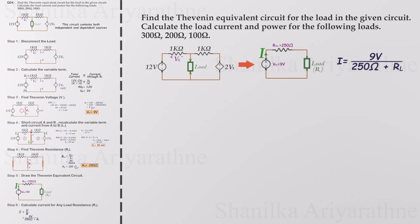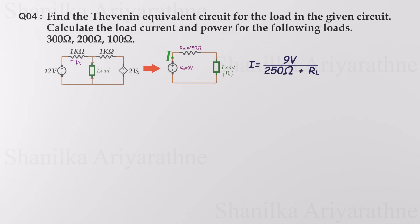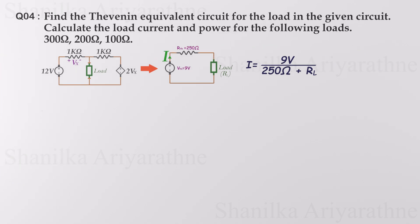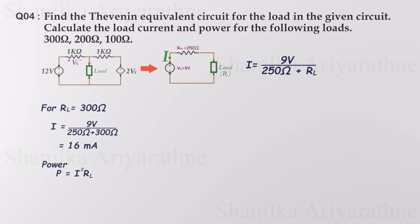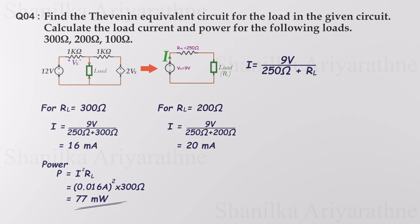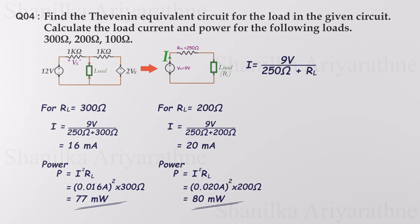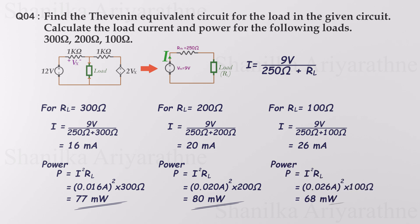Since we now have the Thevenin equivalent circuit, we can test it for any load. For 300 ohms, the load current is 16 milliamps and the load power is 77 milliwatts. For 200 ohms, the load current is 20 milliamps and the load power is 80 milliwatts. For 100 ohms, the load current is 26 milliamps and the load power is 68 milliwatts.